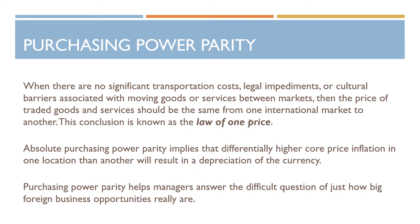The law of one price basically tells us that if goods and services have almost the same value in two different countries, as long as we can calculate the exchange rate correctly, then we should always get the correct value of the two goods. When we talk about absolute purchasing power parity, we basically refer to any differentially higher core price inflation in one country or location than another, which will usually result in a depreciation of that currency in that one location.